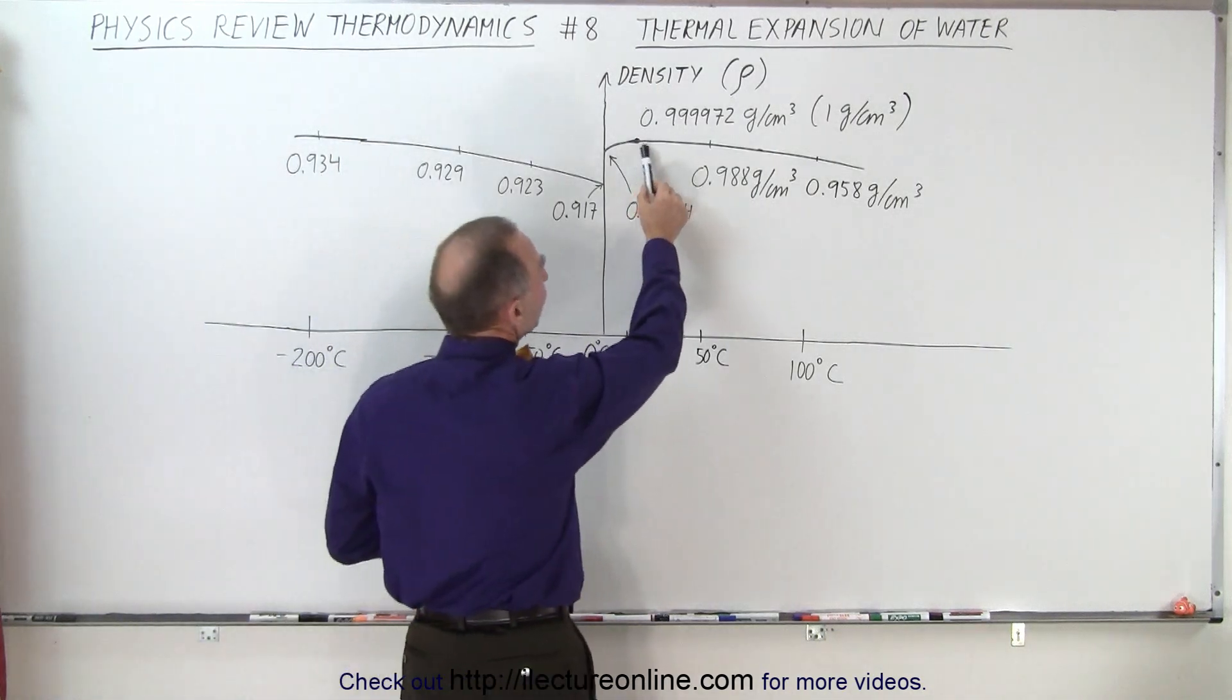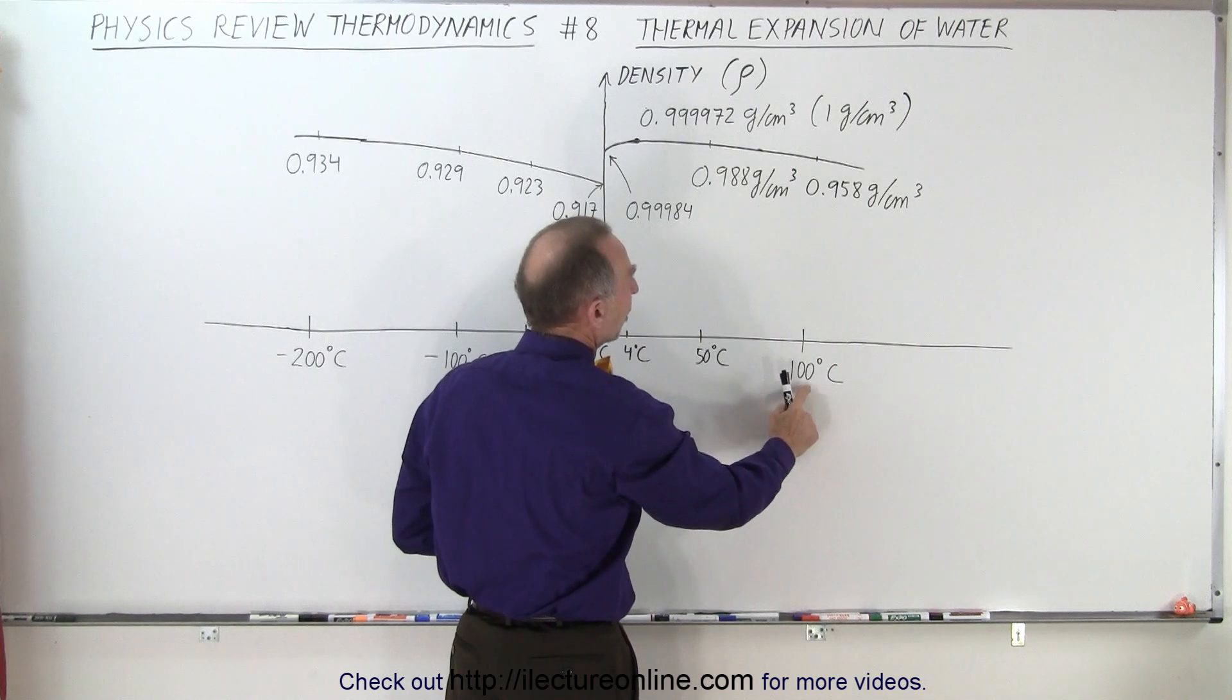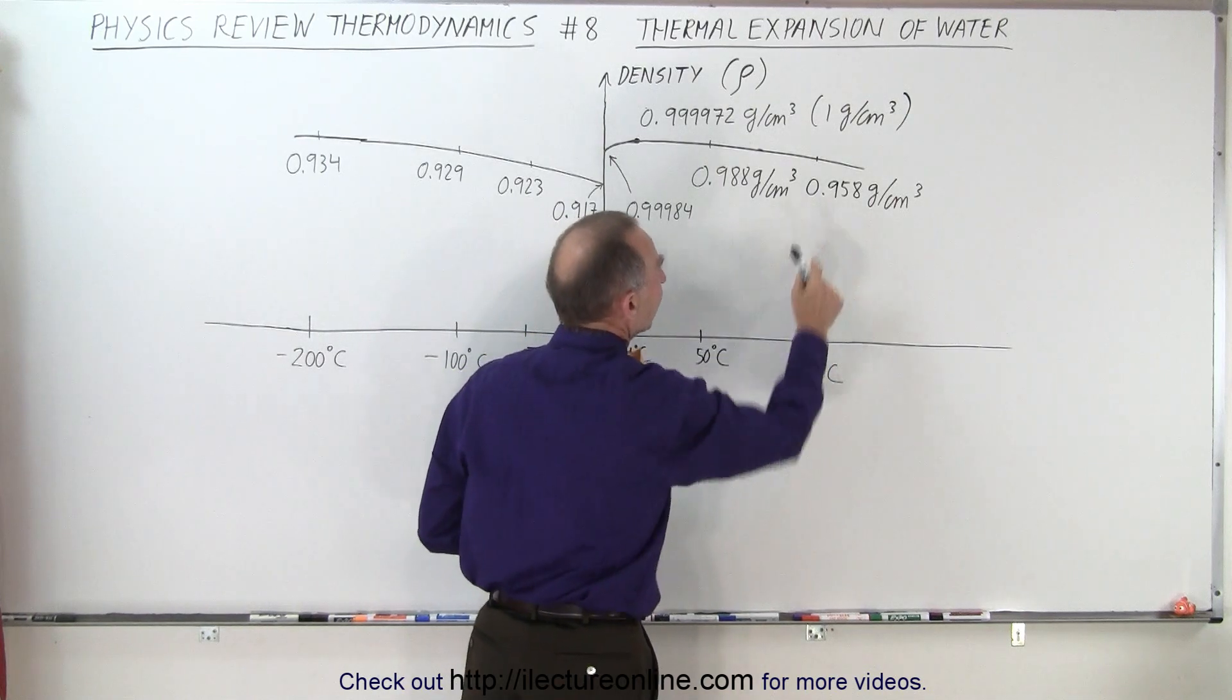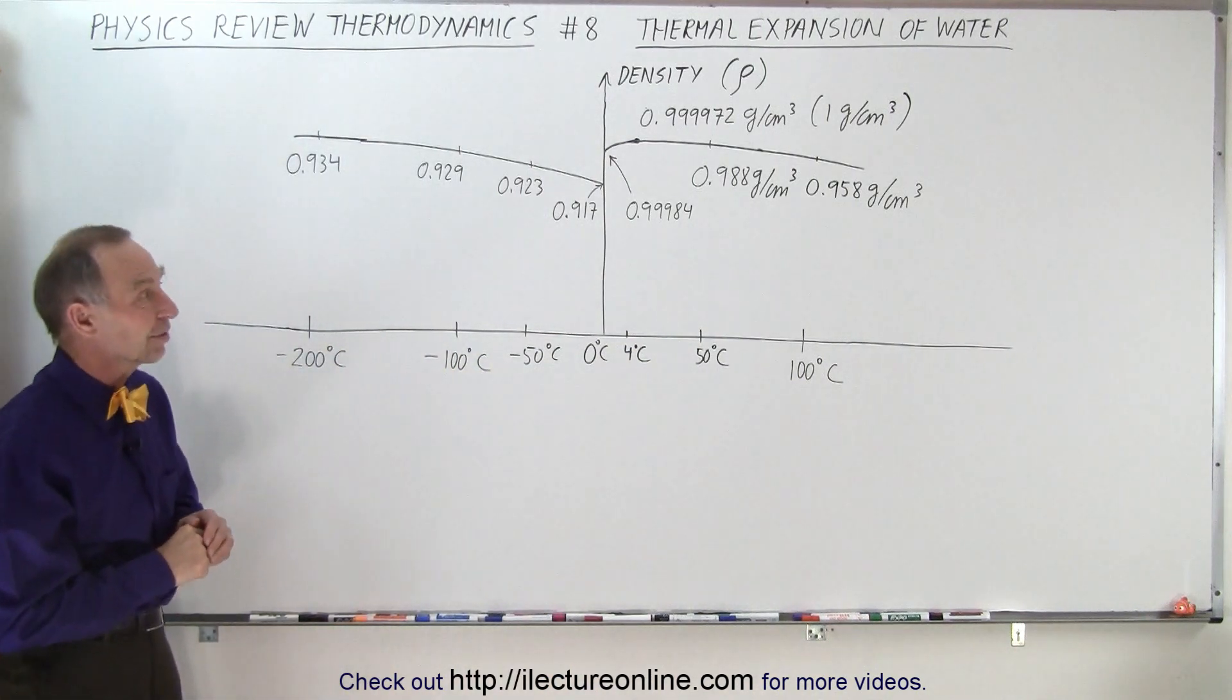And then notice as water is being heated, it becomes less and less dense. And by the time the water reaches 100 degrees Celsius, the density has dropped back down to 0.958 grams per cubic centimeter.